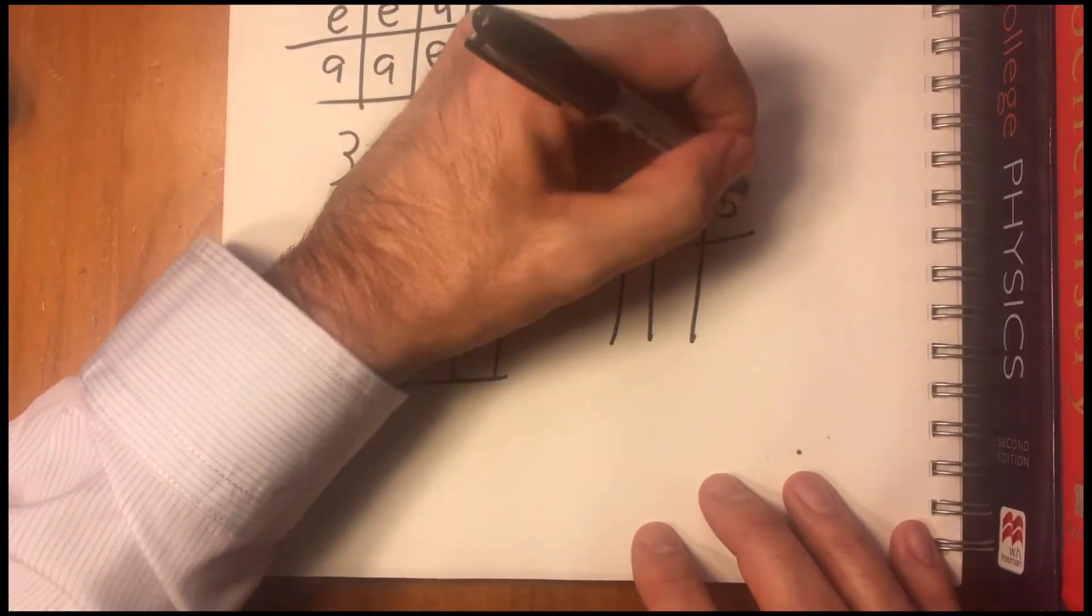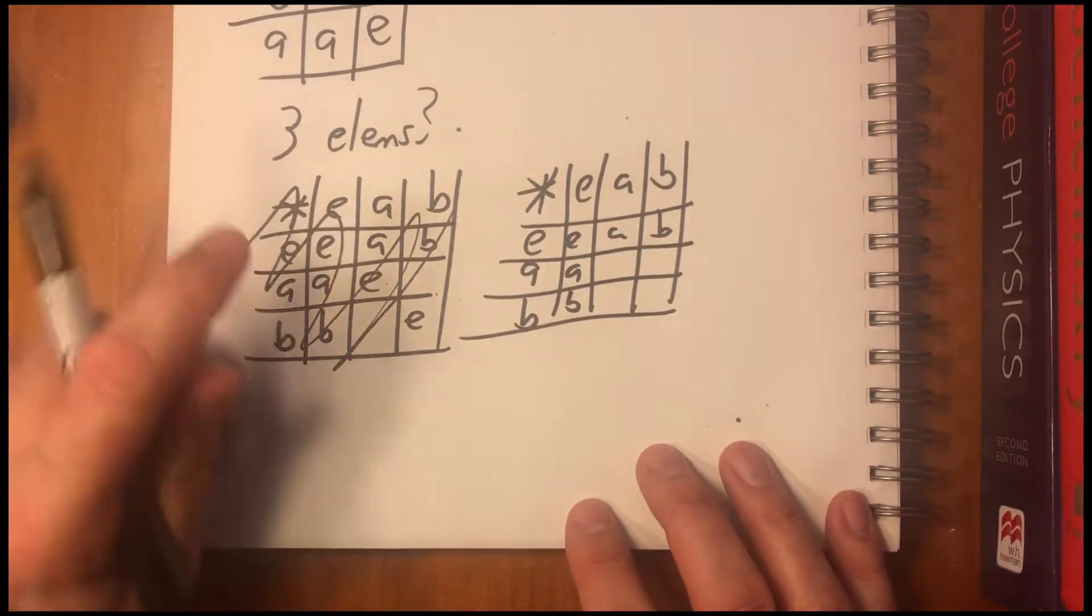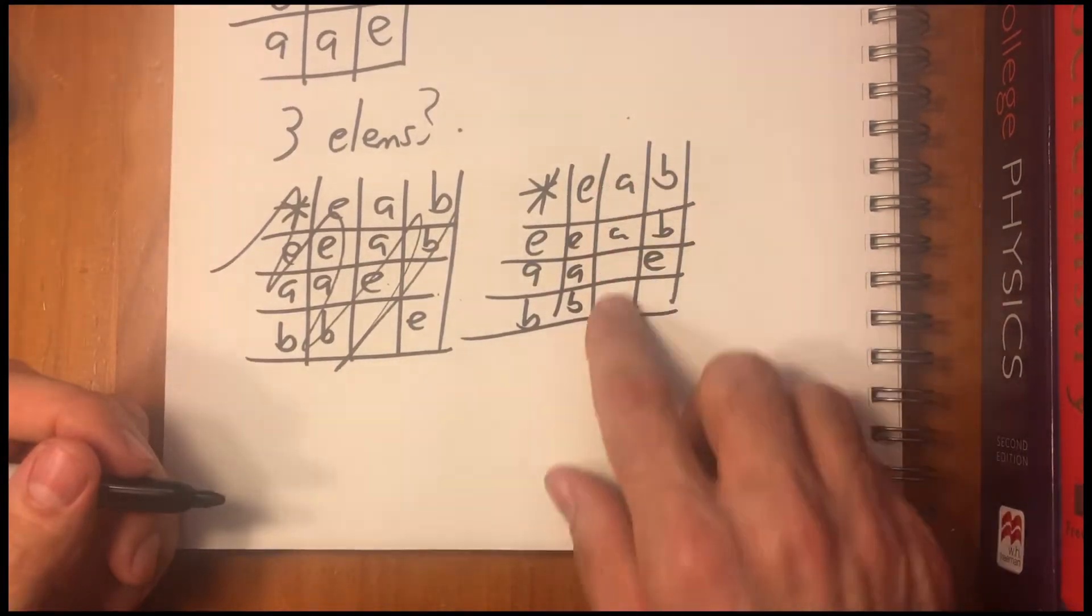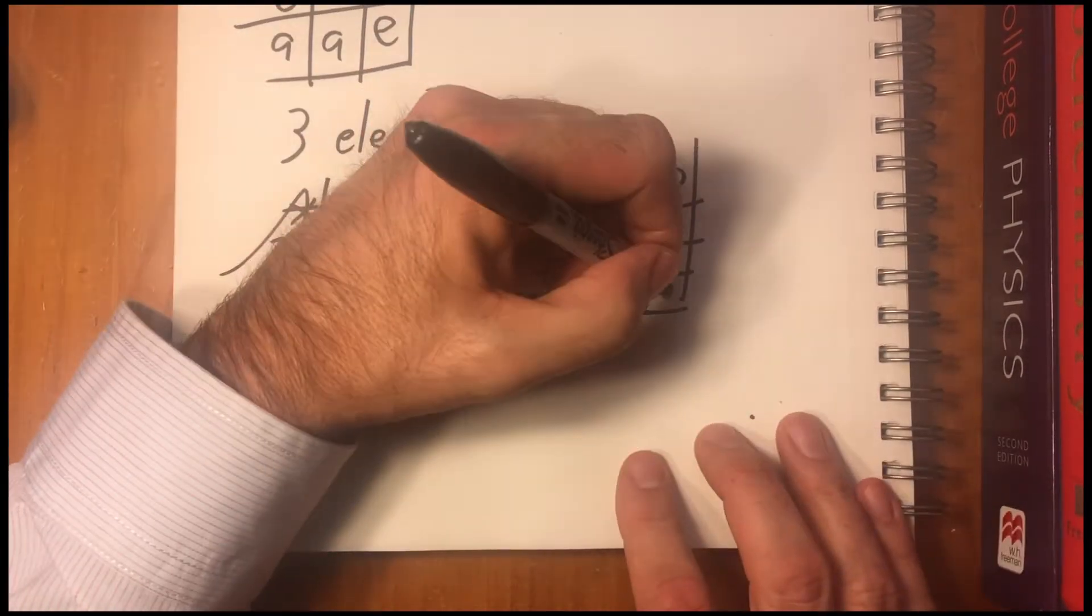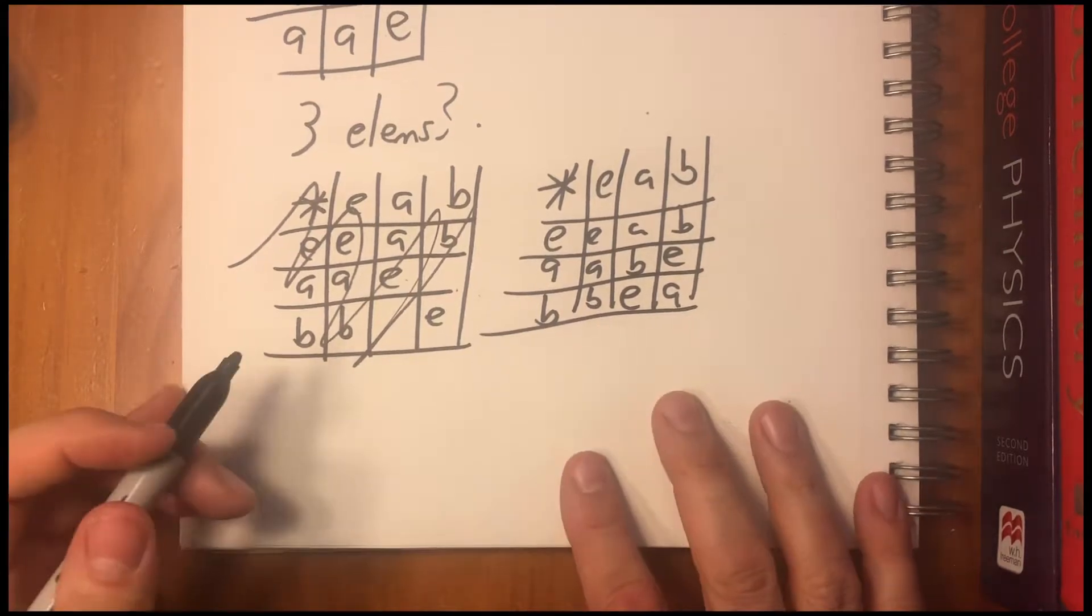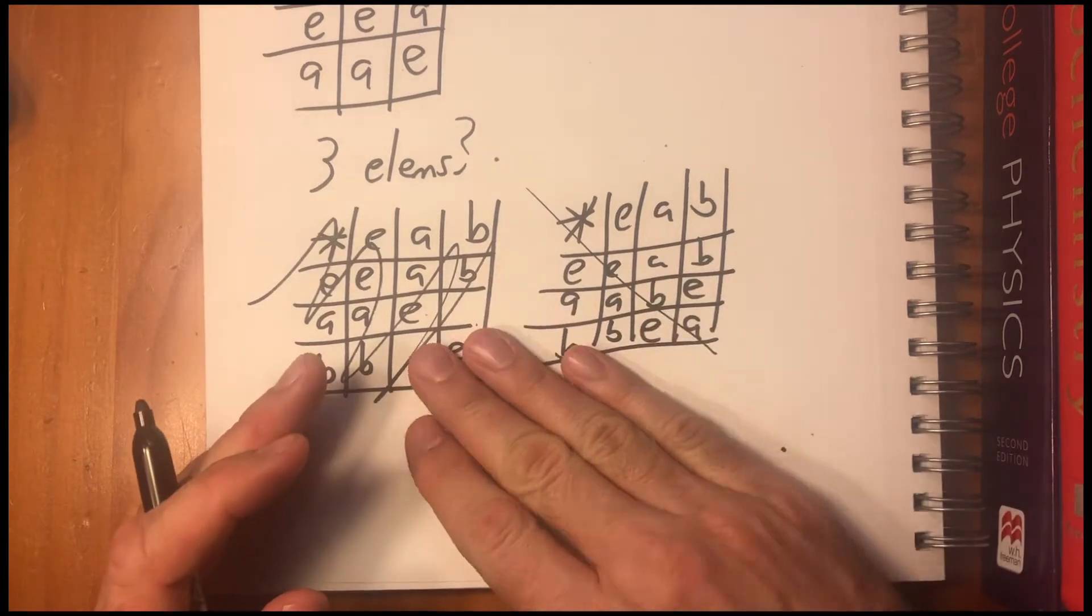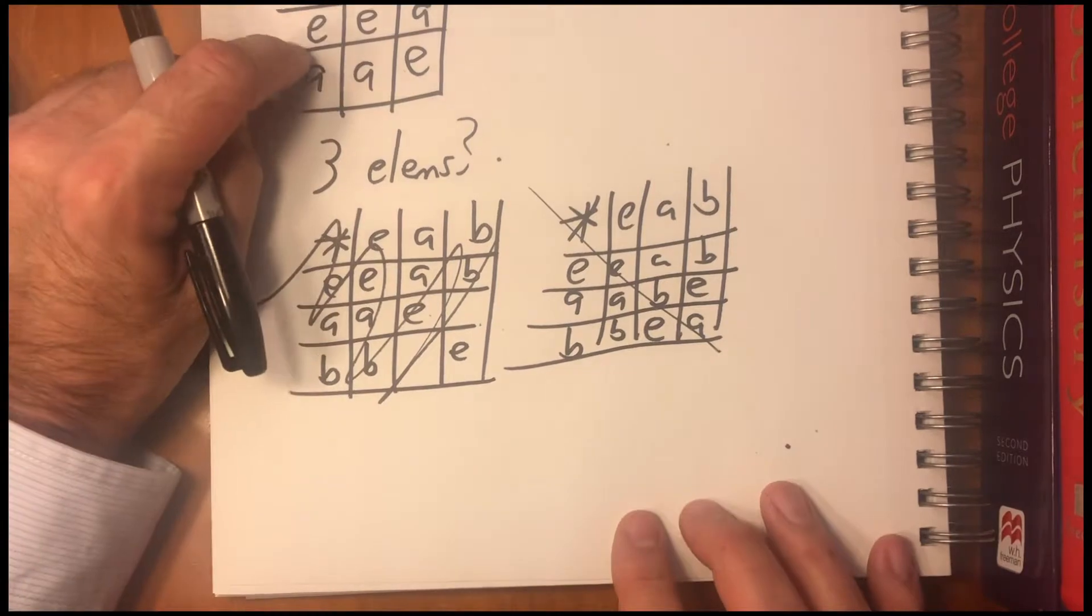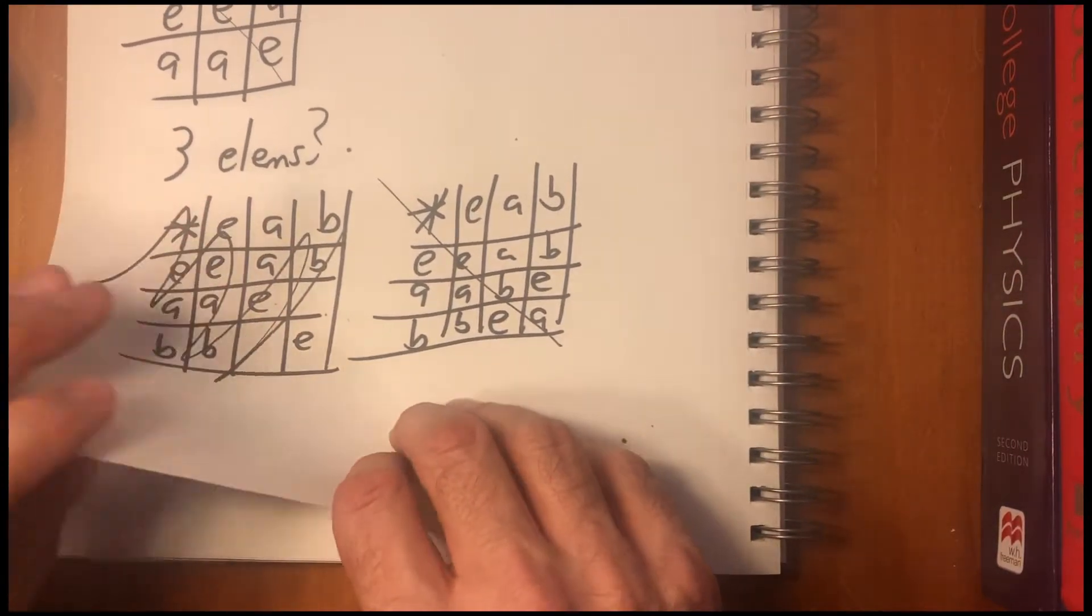So there's only one other way to do it. E, A, B. If E can't go there, it has to go there. And then each column needs one of each, and each row needs one of each, so it has to go there. So we have A's, we don't have a B. We have B's, we don't have an A. So this is the only three-element group. Another interesting thing is you can tell instantly whether a group is abelian, commutative, by whether it is symmetrical across this diagonal. And you can see that this one's abelian, this one's abelian. And it turns out that every cyclical group is abelian, I think.